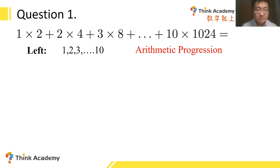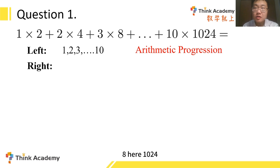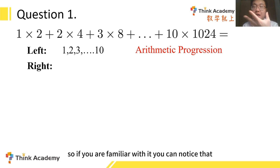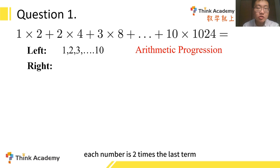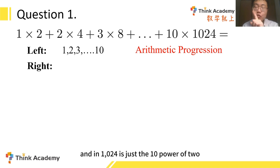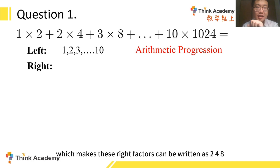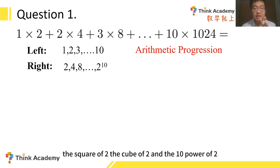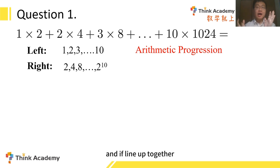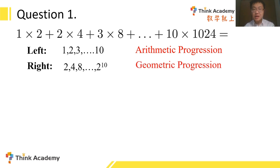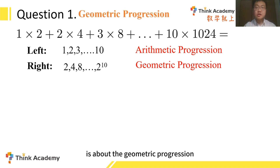But what about the right factor? The right factor is 2, 4, 8, up to 1024. Each number is 2 times the last term — 4 is 2 times 2, 8 is 2 times 4. And 1024 is just the 10th power of 2. So the right factors can be written as 2, 4, 8, 2², 2³, up to 2¹⁰. Lined up together, they are called a geometric progression. So this question is actually about the geometric progression.